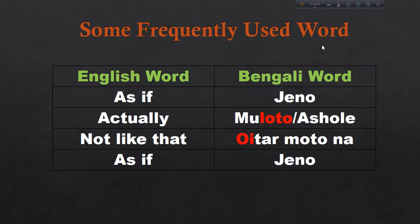Our next slide covers more words. 'As if' means 'jeno'. 'Actually' means 'muloto' or 'asholy'. 'Not like that' means 'oitaar moto na'. We already learned that 'that' means 'oita' and 'this' means 'eta'. So 'not like that' is 'oitaar moto na', and 'not like this' is 'etaar moto na'.